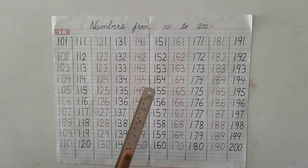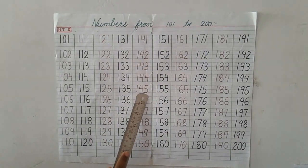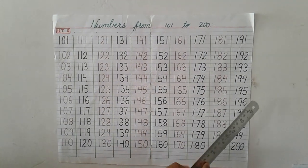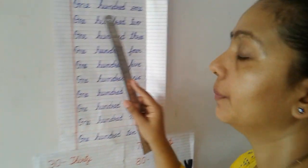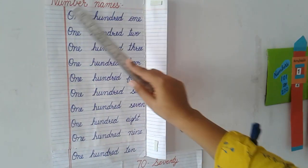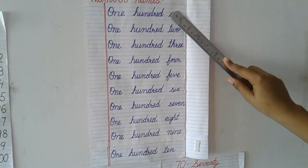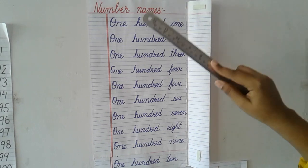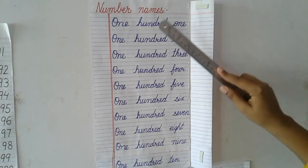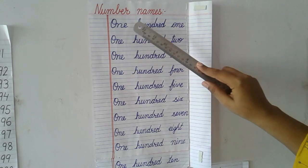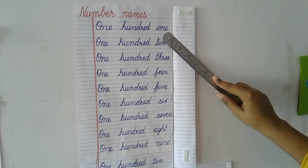Now, let us see number names. Number names — student, we all have names, and so do numbers. Numbers also have names.